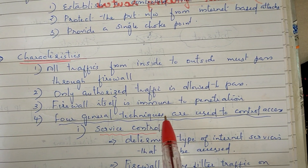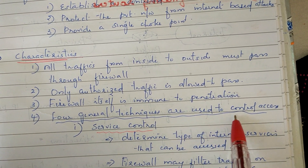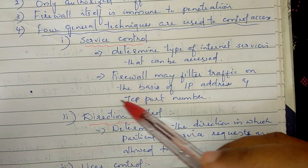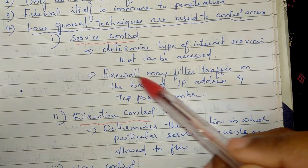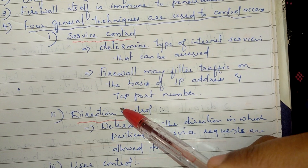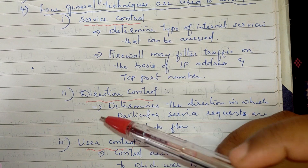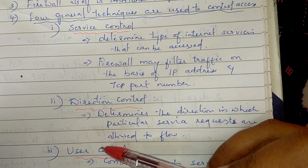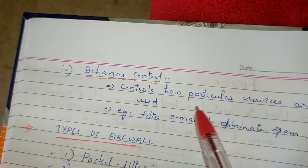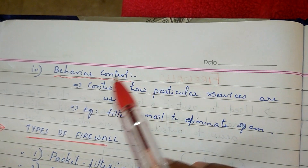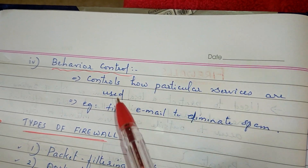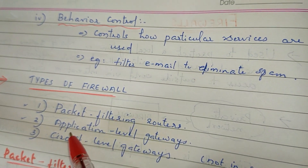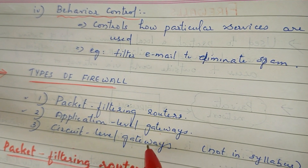There are four general techniques that can be used to control access. Service Control — I will determine the type of service. Direction Control — the flow of service requests. Then User Control — which user can access those services. That is why we use user control. And the last one is Behavior Control — that is why we can use the services. There are three types of firewalls: Packet Filtering Router, then Application Level Gateway, and Circuit Level Gateway.